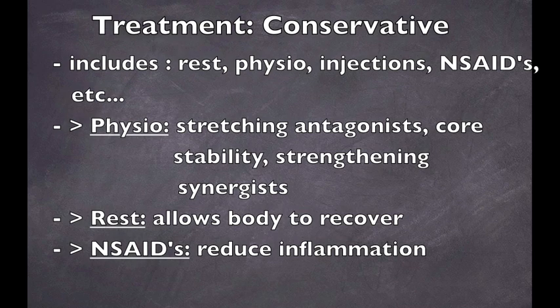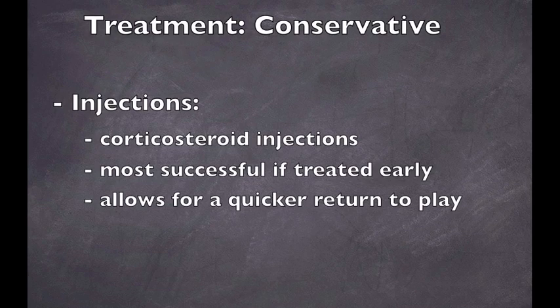The more reliable conservative methods are physiotherapy, rest, NSAIDs, and corticosteroid pubic symphysis injections. With physiotherapy, the focus should be on stretching the antagonist muscles at the pubic symphysis, core stability, and strengthening the surrounding muscles. These are just guidelines — every patient is different and will have different needs. Rest allows the body to recover while avoiding further injury. NSAIDs reduce the inflammation at the area, alleviating pain. A combination of these three is generally used for optimal results. Injectional therapy is also used and evokes a quicker return to play than other conservative measures; it is most effective when symptoms first appear and before the condition becomes chronic.